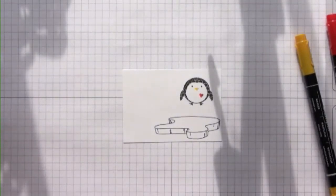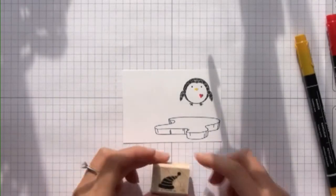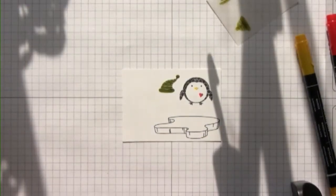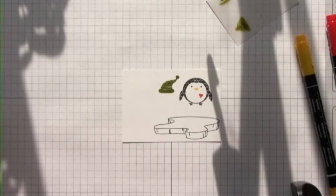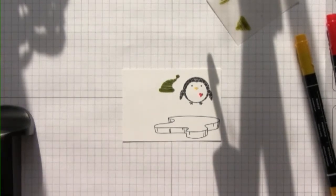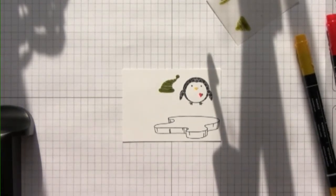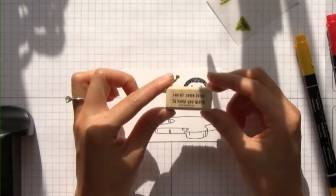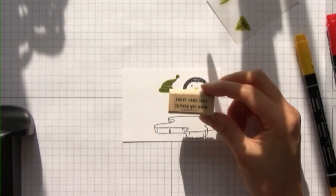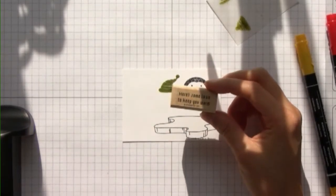I'm going to make him a little hat by taking this stamp from the same stamp set. And I'm going to stamp the sentiment which says, here's some love to keep you warm. I thought that was really great for a teabag holder.